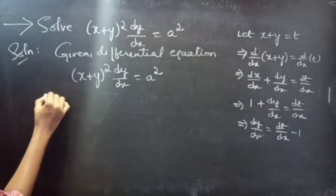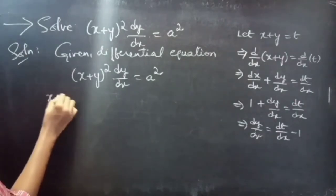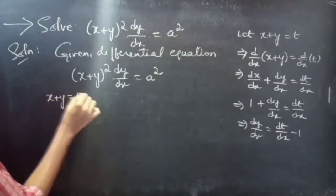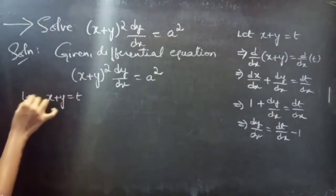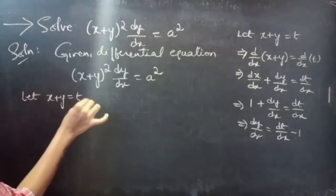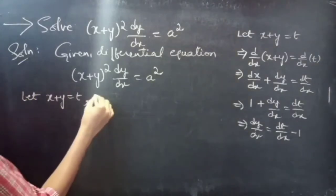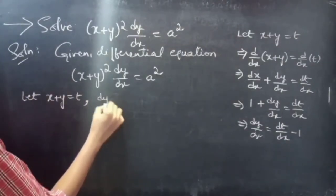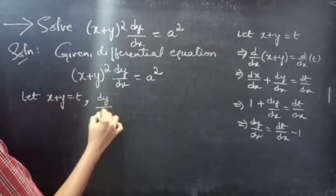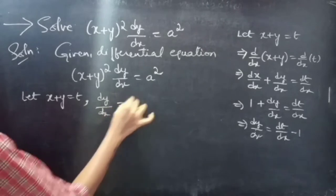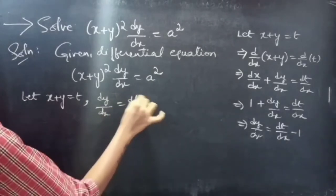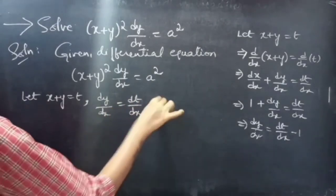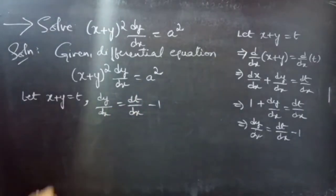So we have x + y = t, and dy/dx = dt/dx − 1.